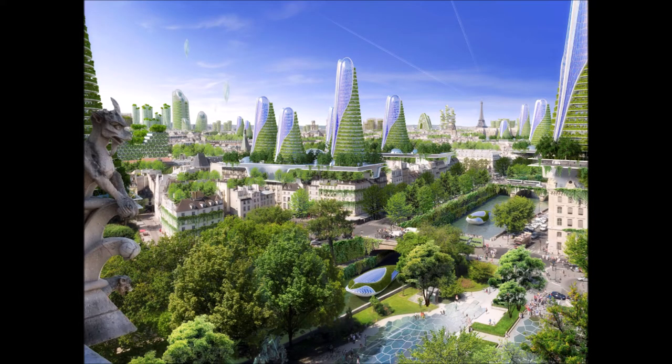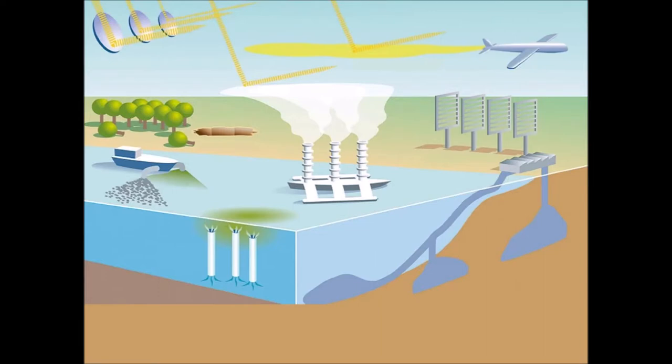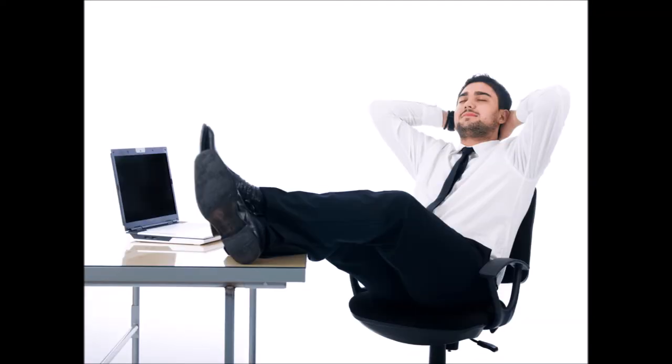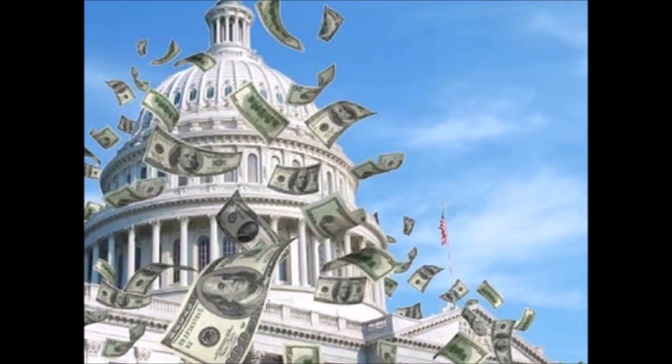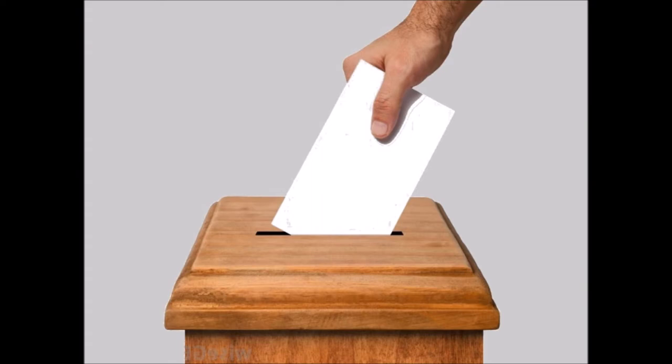We might still be able to avert the apocalypse if we throw everything we've got at this problem, but our rulers are doing almost nothing because they can't see past the short-term profits keeping them in power, and we can't vote them out.